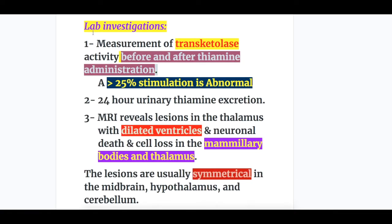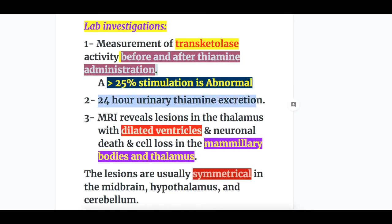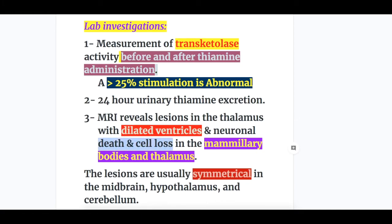The lab investigations in Wernicke's Encephalopathy: number one, measurement of transketolase activity before and after thiamine administration — a more than 25% stimulation of transketolase is abnormal; number two, 24-hour urinary thiamine excretion; number three, MRI. MRI reveals lesions in the thalamus with dilated ventricles and neuronal death and cell loss in the mammillary bodies and thalamus. The lesions are usually symmetrical in the midbrain, hypothalamus, and cerebellum.